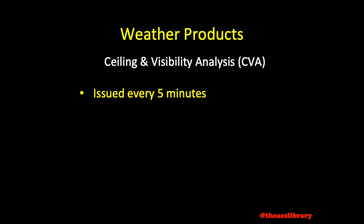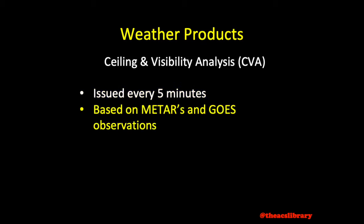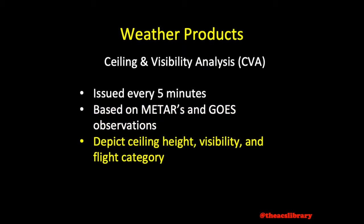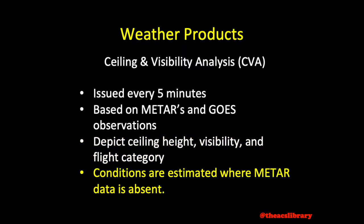CVAs are issued every 5 minutes based on current METAR and Geostationary Operational Environmental Satellite, or GOES, observations, and depict user-selectable representations of ceiling height, visibility, and flight category. In areas where METARs are not present or scarce, conditions will be estimated.